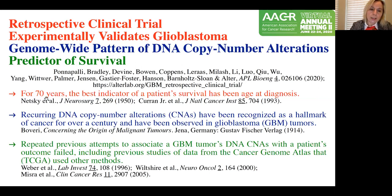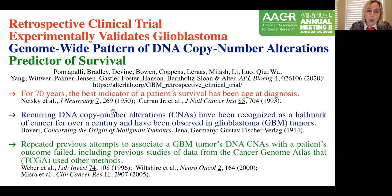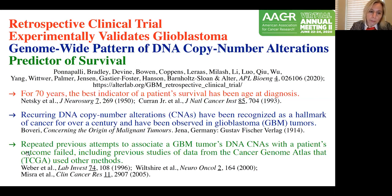Just to put this in context: for 70 years, the best indicator of GBM survival has been age at diagnosis. Copy number alterations have been observed in GBM tumors again and again. However, repeated attempts to associate them with patient outcome, such as survival or response to treatment, failed.